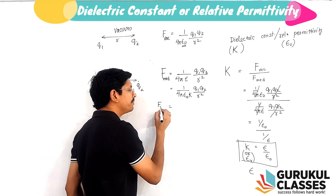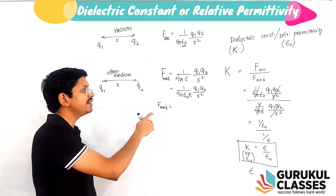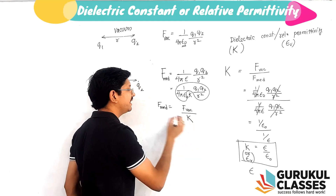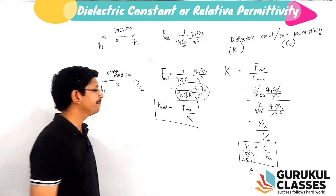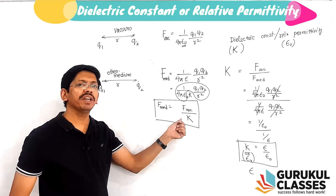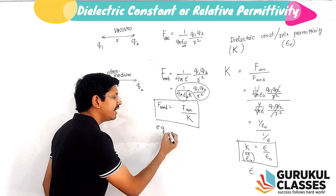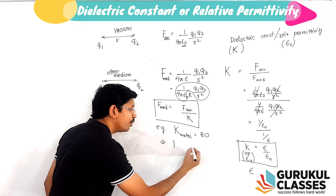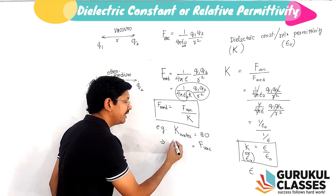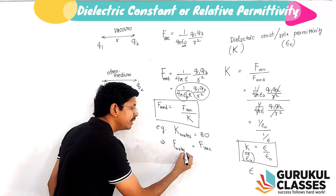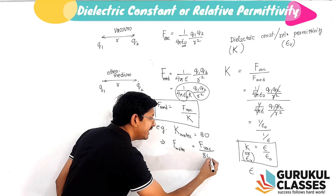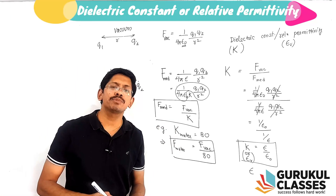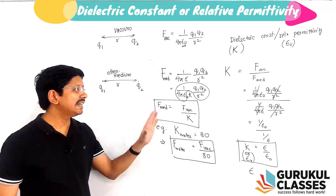This gives us the formula: F = 1/(4π ε₀ k) × q₁q₂/r². The force in a medium equals the vacuum force divided by k. For example, water has a dielectric constant of 80, meaning if the same charges are placed in water instead of vacuum, the force between them becomes 1/80 times the vacuum force. That is what the dielectric constant tells us — how many times the force is reduced compared to vacuum.